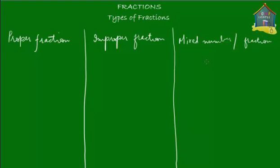The first kind — let's talk about the proper fraction. A proper fraction is your common, ordinary fraction. There's nothing fancy about proper fractions. In a proper fraction, the numerator, which is the top number of the fraction, is smaller than the denominator.